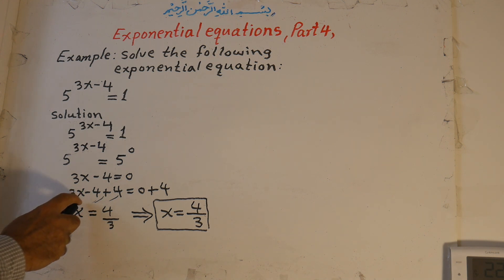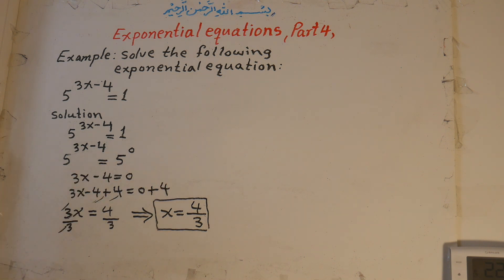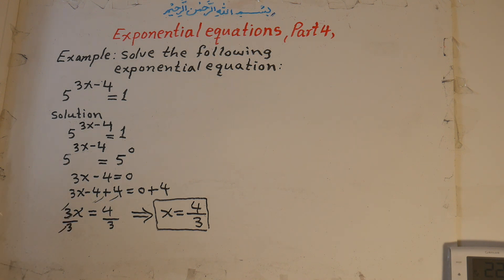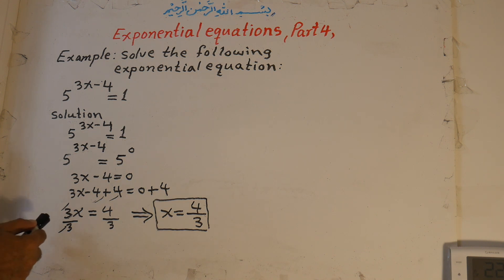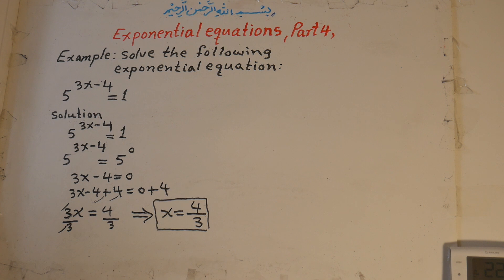From here, 3x minus 4 equals 0. We add positive 4 to both sides: the negative 4 and positive 4 cancel, so 3x equals 4. To solve for x, we divide both sides by the coefficient of x, which is 3. The 3 cancels, and x equals 4 over 3. That is the answer for this equation.